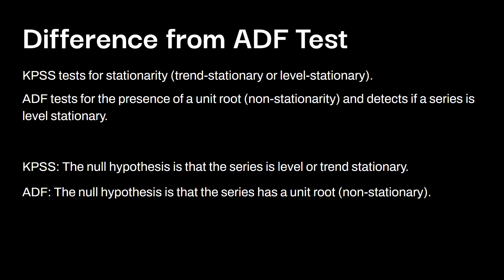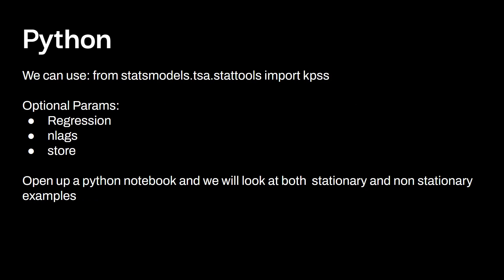The differences between the KPSS test and the ADF test: KPSS specifically tests for stationarity, whether it's trend or level stationary. Whereas the ADF test looks for the presence of a unit root, which assumes data is non-stationary and detects if a series is only level stationary — it does not distinguish between trend stationary and level stationary, whereas KPSS allows us to look at both. The null hypothesis for KPSS is that the series is level or trend stationary; for ADF, the null hypothesis is that the series has a unit root (non-stationary). On the Python side, we can use statsmodels.tsa.stattools and import KPSS.